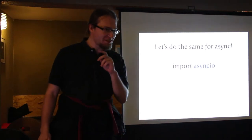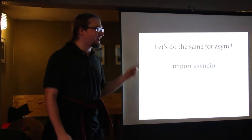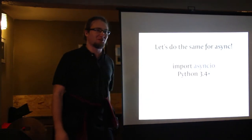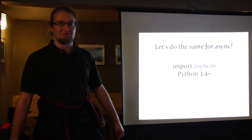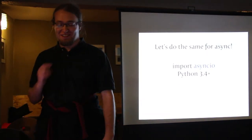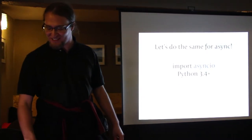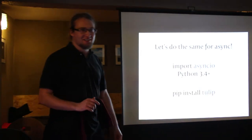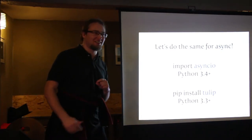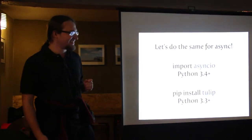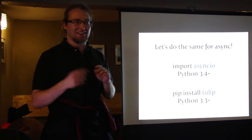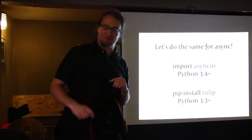This new shiny thing is called AsyncIO. It's very new and shiny — you can get it in Python 3.4, which was in beta at the time. If you're not that bleeding edge, you can install it as 'tulip' with the current version of Python. It's basically the candy meant to lure you to Python 3.